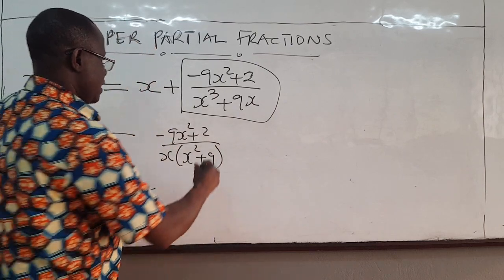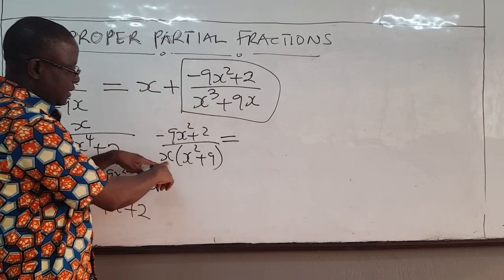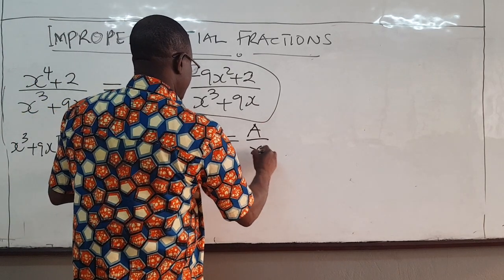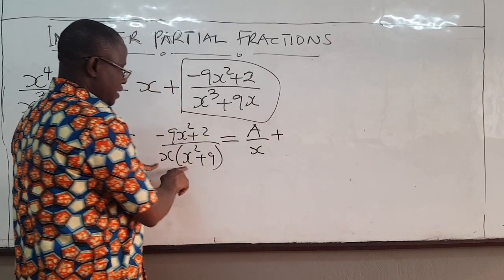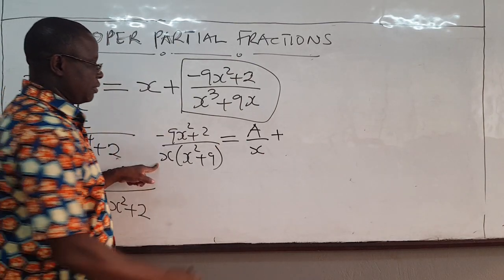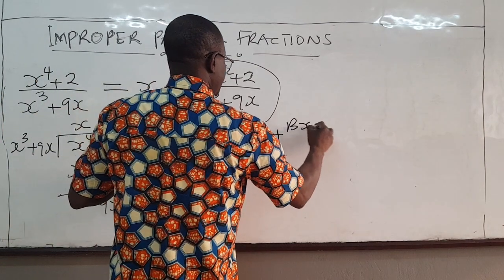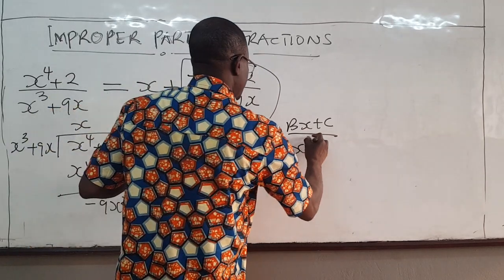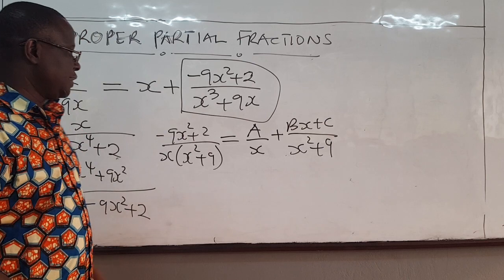Much easier to do it. Because this can be written as, since this is a linear, this is a over x plus, this is quadratic, which is irreducible. So I need bx plus c all over x squared plus 9. Then you solve for a, b, and c.